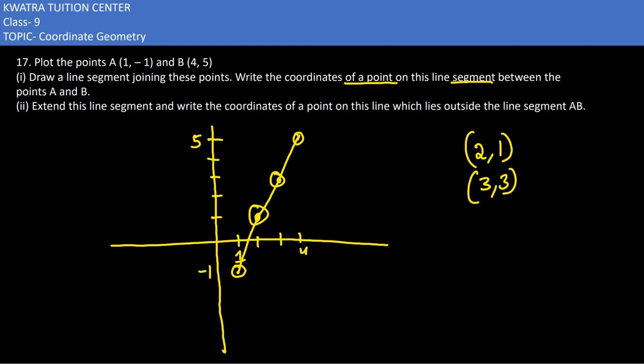So it can be above (4, 5) and it can be below your (-1, 1). (-1, 1) ek point humara badke 5 ho jayega, it would be, so humara coordinate kya ho gaya (5, 7).